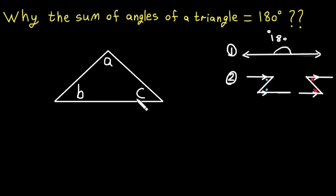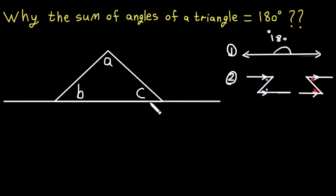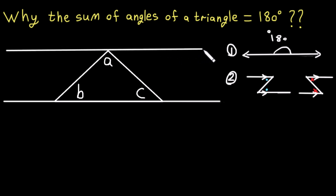To prove this, we extend the bottom side of the triangle. Then we draw a line parallel to the bottom side passing through the top vertex of the triangle. These three points are called vertices of the triangle.